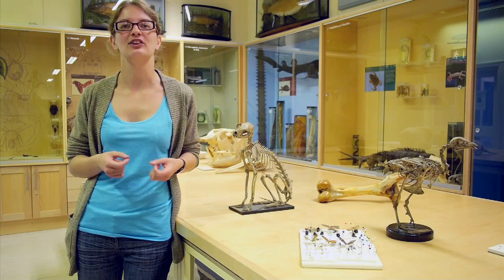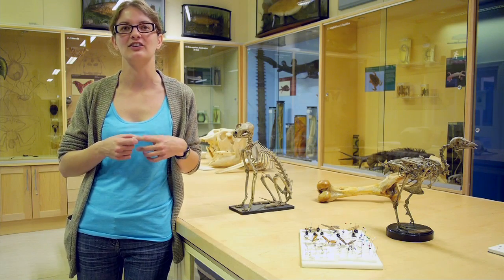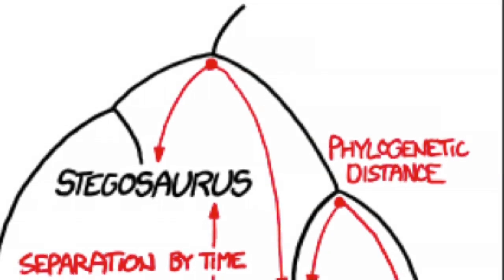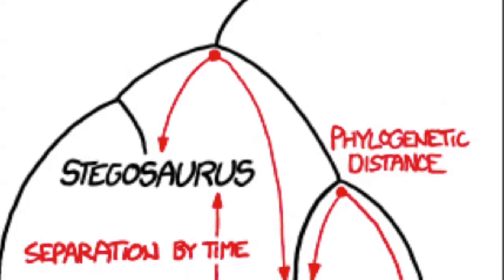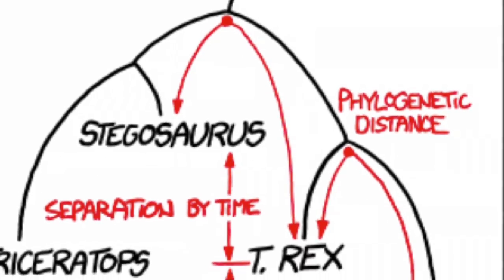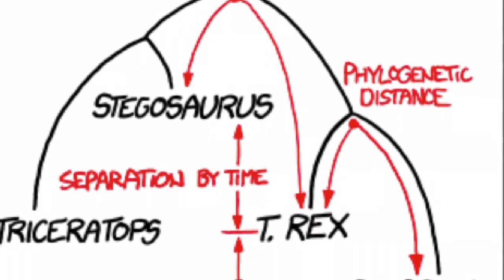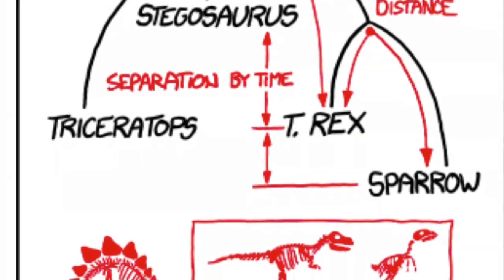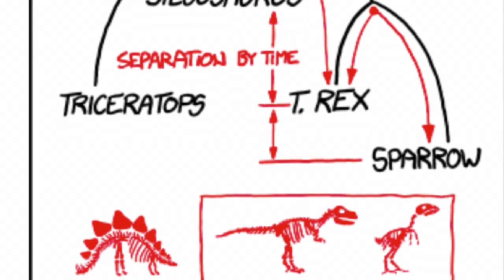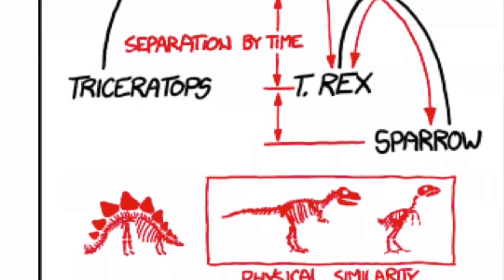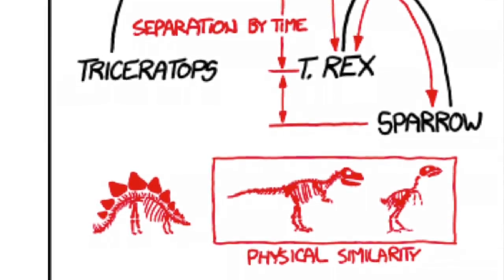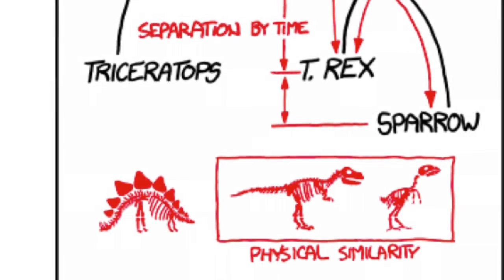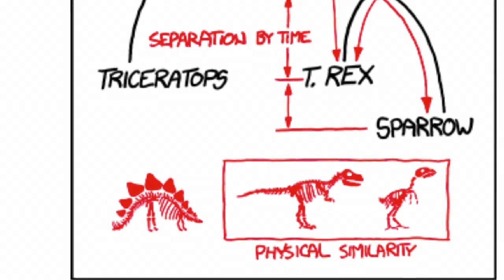So instead what I need to use are these things called phylogenetic trees, or family trees. These show how species are related and also how long ago they evolved, and I can use this information along with information from fossils, museum specimens, and other data from various books.